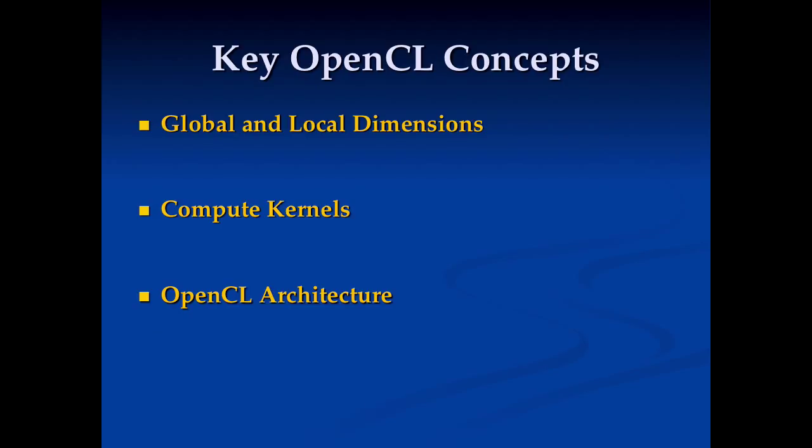So in the next part of this, we're going to talk about three key OpenCL concepts. We'll talk about global and local dimensions. This is how you specify your parallelism. Compute kernels. This is how you specify the code you're going to execute. And the OpenCL architecture. And this is how you go through and you understand where data is and how it's moving around.